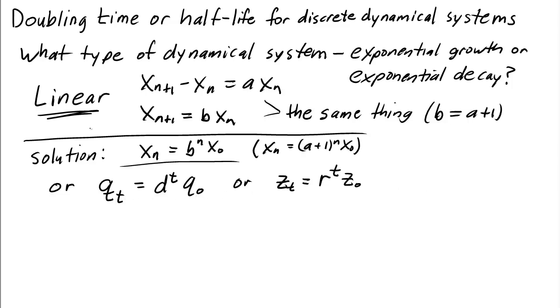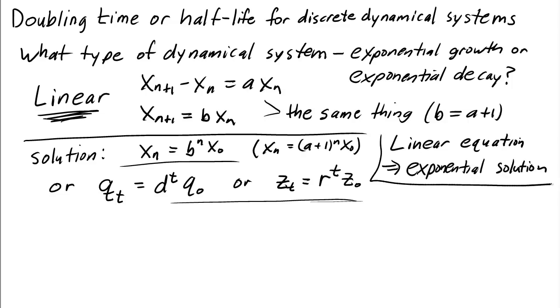But all these equations for the linear systems end up having exponentials for the solution. A linear equation means exponential solution. And these are the simplest types of dynamical systems, these linear equations which have exponential solutions.